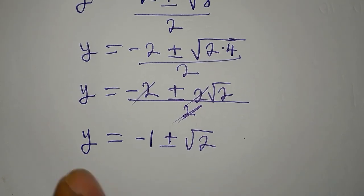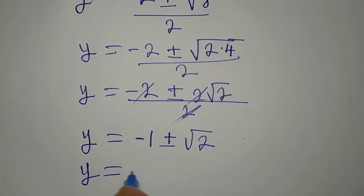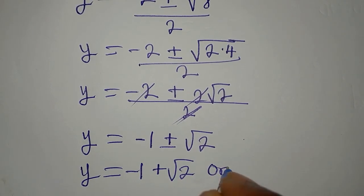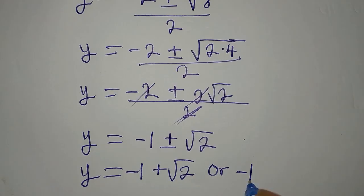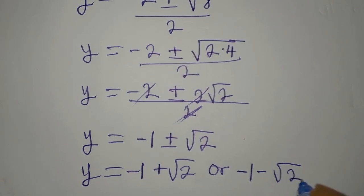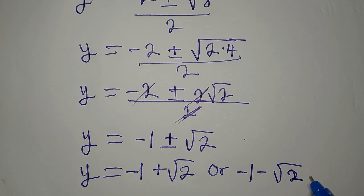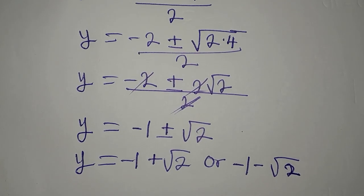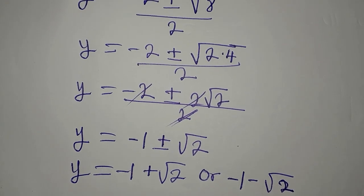Now I would like us to have this in decimal form. By the way, y is minus 1 plus root 2, or we have minus 1 minus root 2. So let's get this in decimal form and we substitute into the given equation.